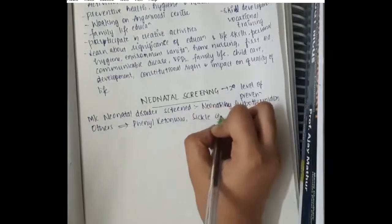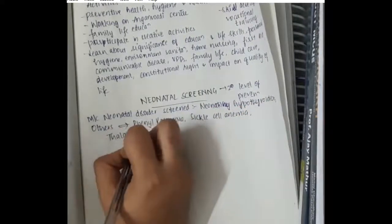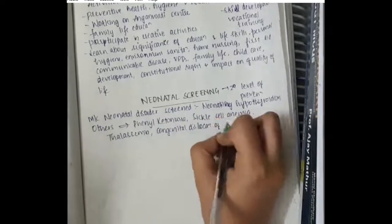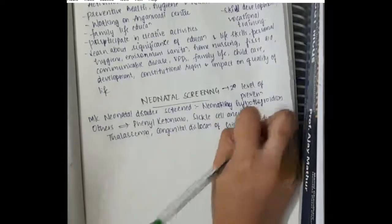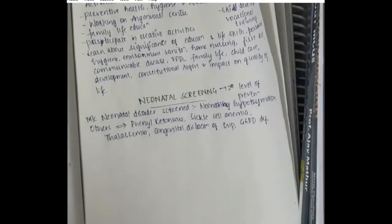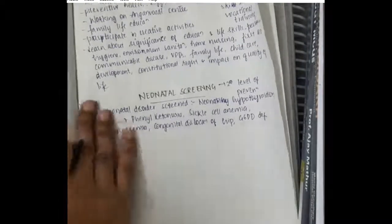Others like phenylketonuria, sickle cell anemia, thalassemia, congenital dislocation of hip, glucose-6-phosphate dehydrogenase deficiency are also screened.